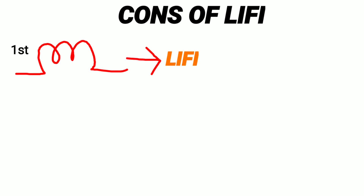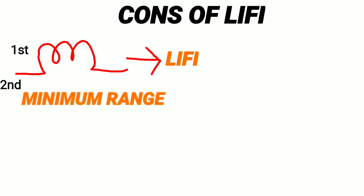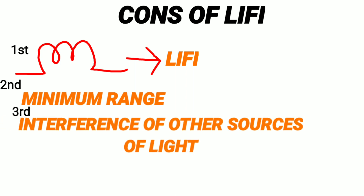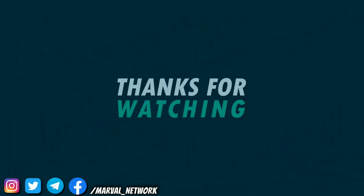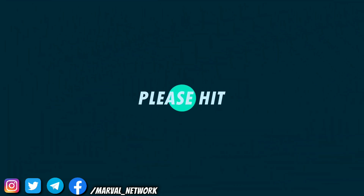Now let's discuss the cons of Li-Fi. First, internet cannot be used without a light source, which could limit the locations and situations in which Li-Fi can be used. Second, because it uses visible light and light cannot penetrate walls, the signal's range is limited by physical barriers. Third, other sources of light may interfere with the signal — outdoors, sunlight will interfere with the signals, resulting in interrupted internet. Fourth, a whole new infrastructure for Li-Fi would need to be constructed.